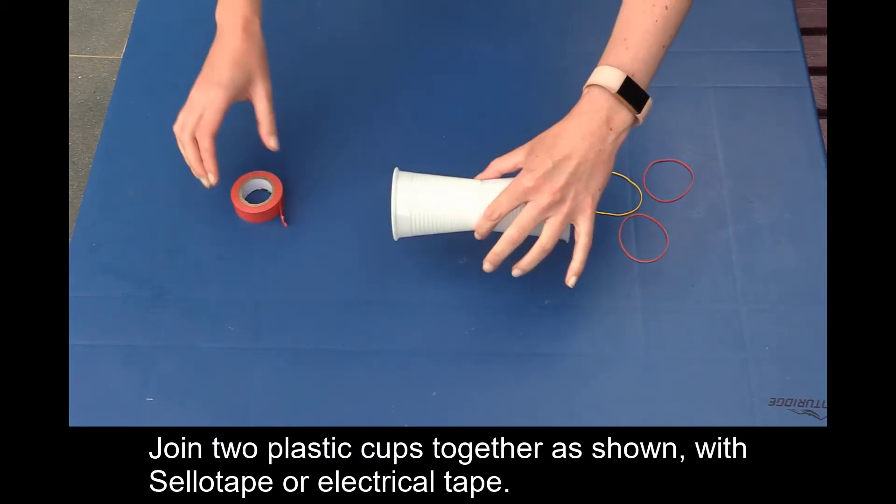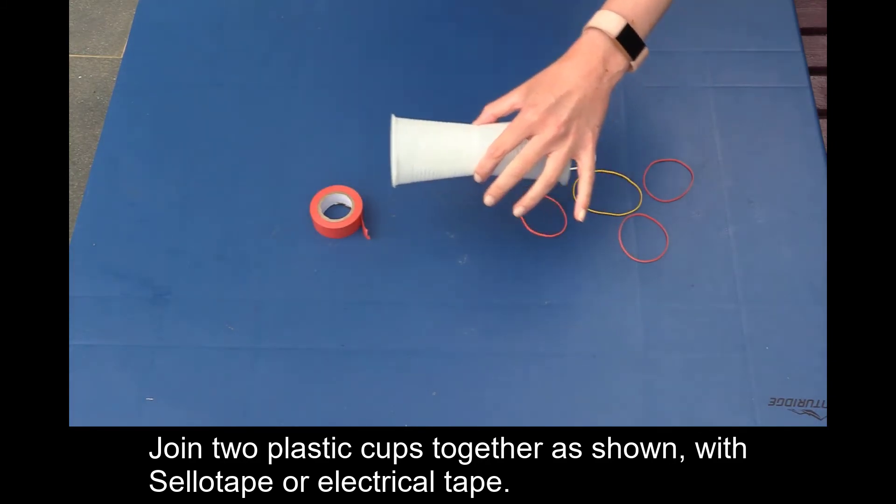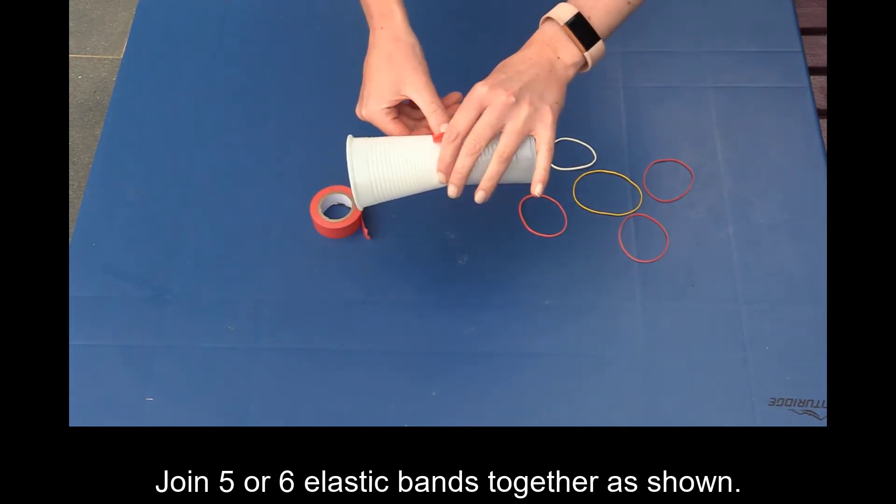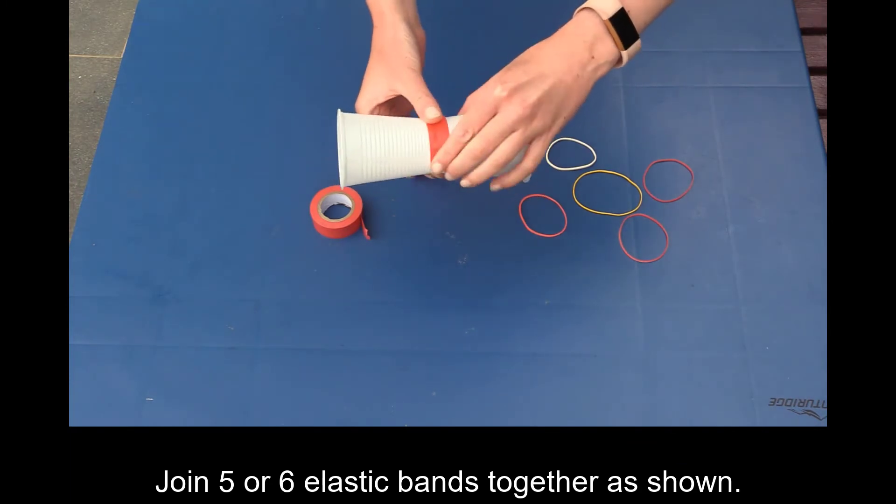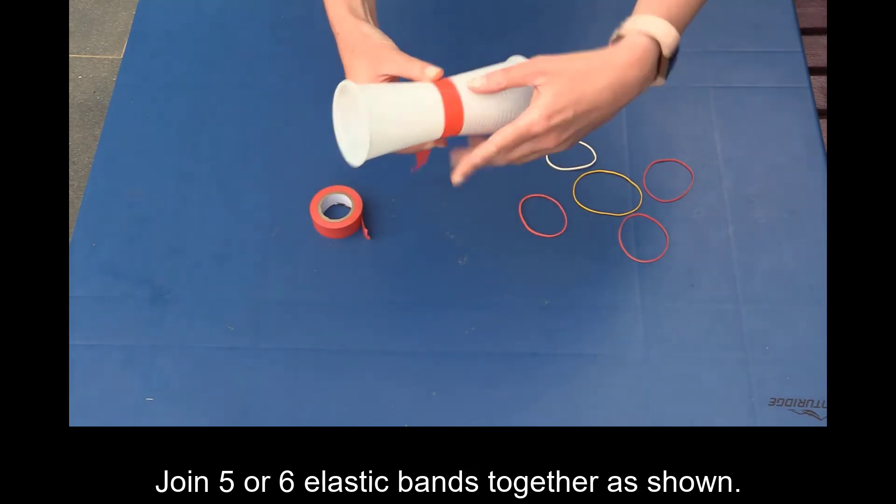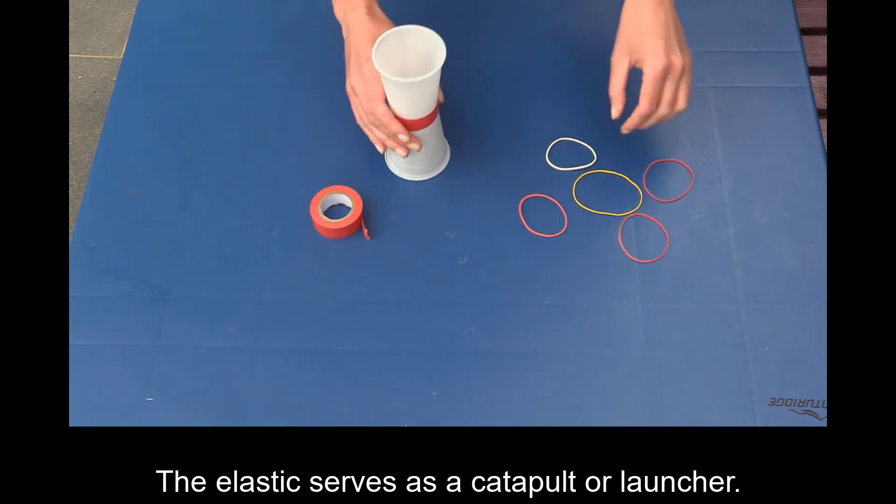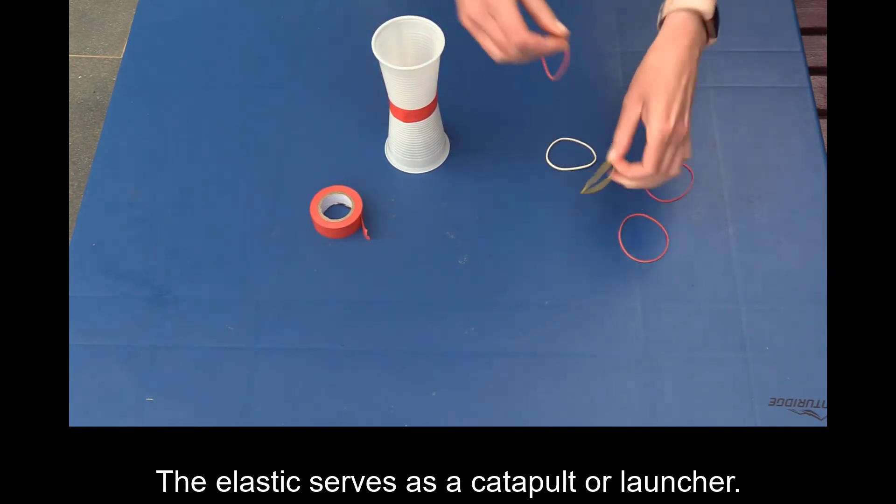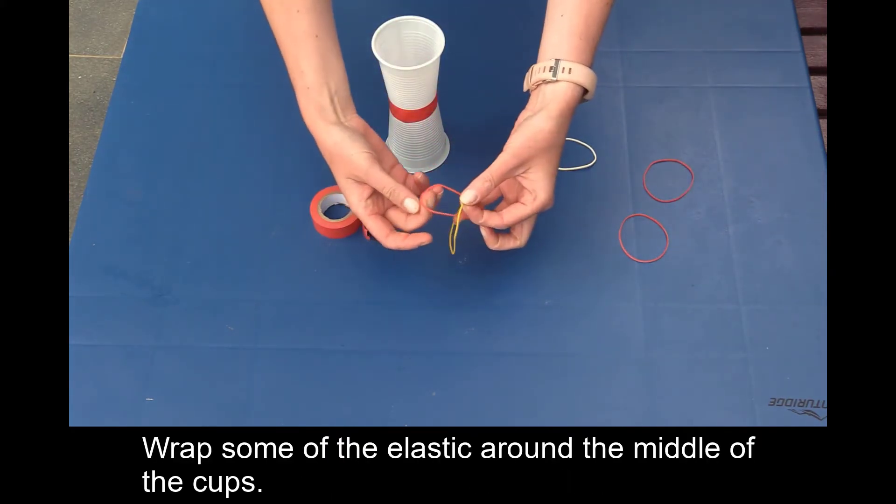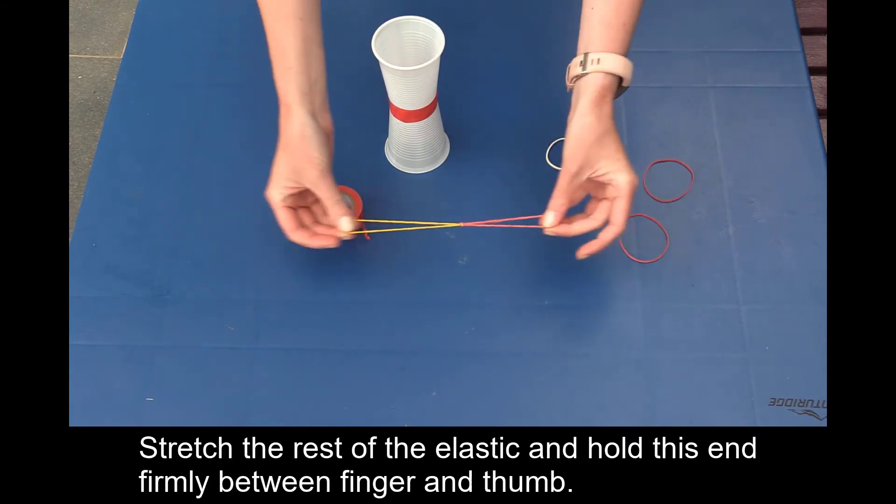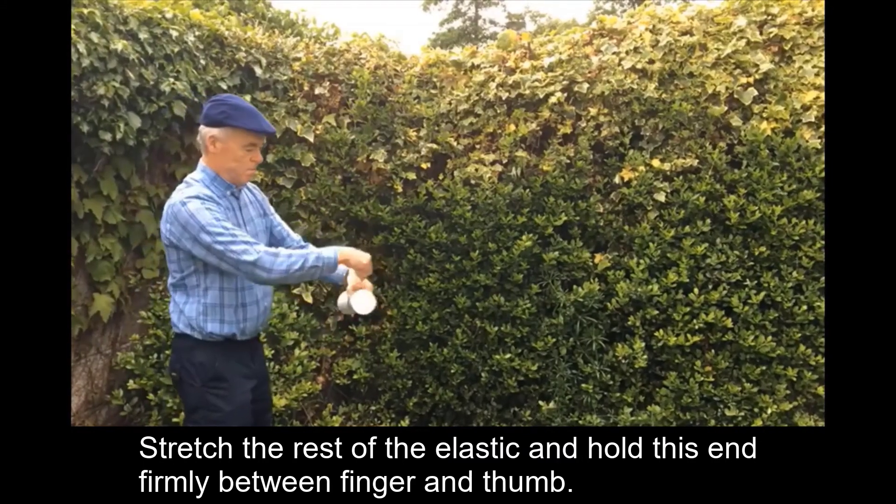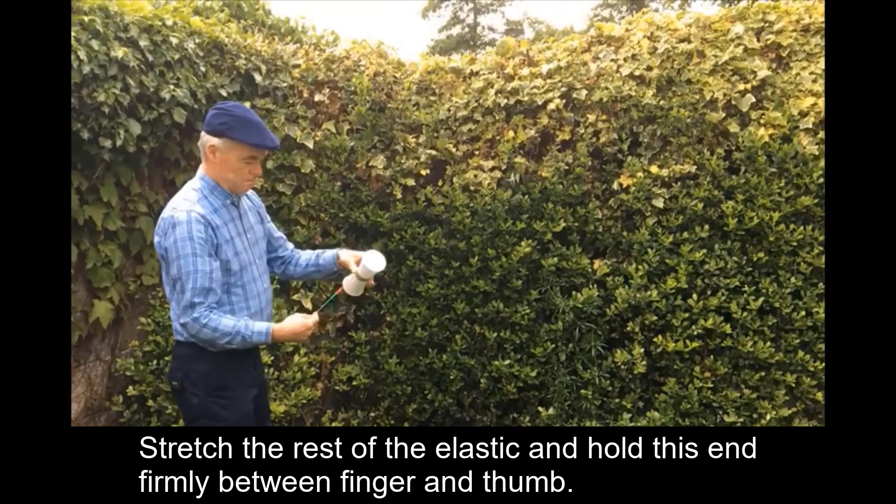Join two plastic cups together as shown with sellotape or electrical tape. Join five or six elastic bands together as shown. The elastic serves as the catapult or launcher. Wrap some of the elastic around the middle of the cups. Stretch the rest of the elastic and hold this end firmly between the finger and thumb.